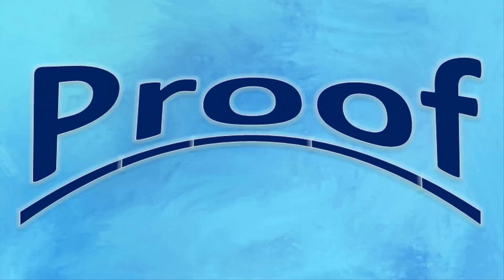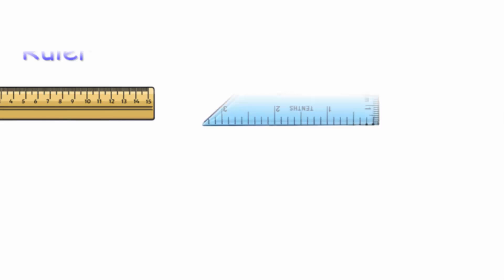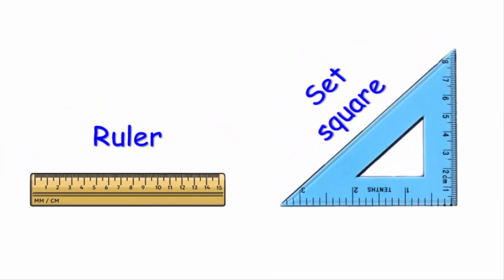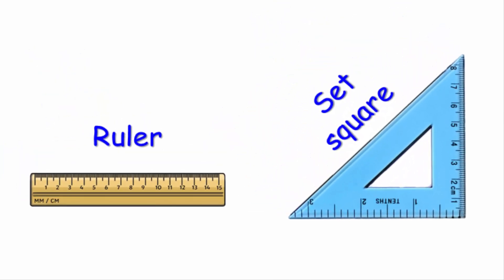Hello, welcome to a proof learning channel. In this video we will explain how to draw a rectangle by using ruler and set square, and of course don't forget the pencil. Follow me. If we want to draw a rectangle ABCD whose length is 8 centimeters and width is 5 centimeters, we must follow the four steps.